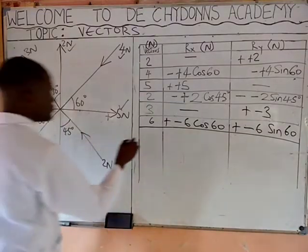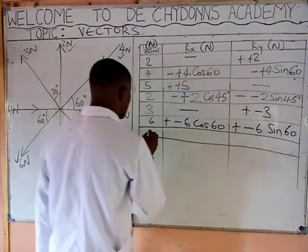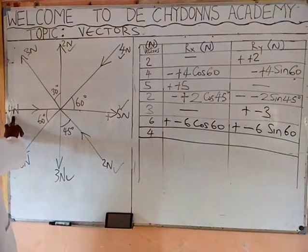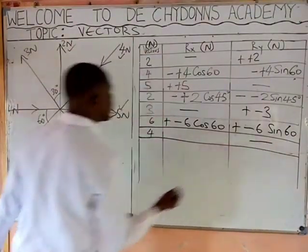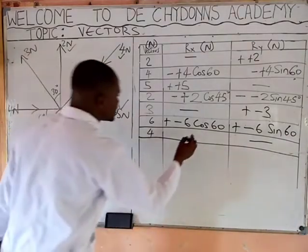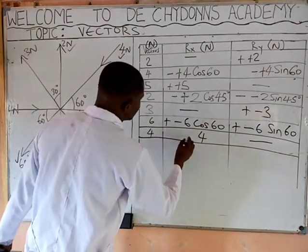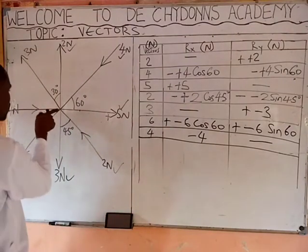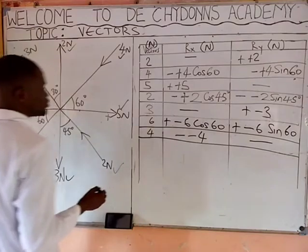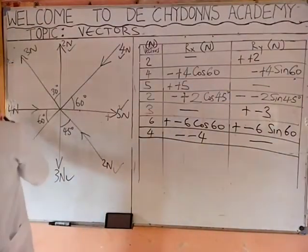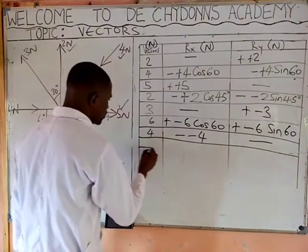The next vector is 4 Newtons, located on the x-axis only, so it has nothing to do with the y-axis. This 4 is located on the negative x-axis. The direction of the arrow is pointing inward, so it is minus. Minus for the arrow pointing inward, and minus for the negative Cartesian axis. Move to the next vector.